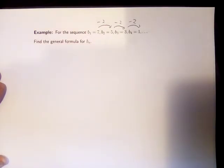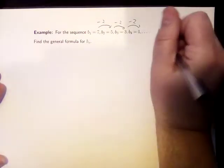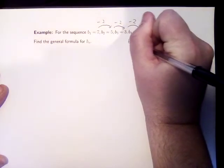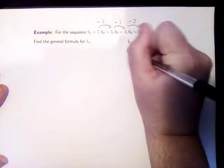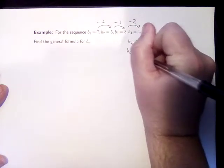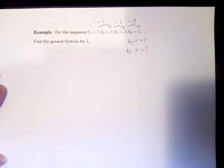So we can predict what should come next. B5 would be decreasing by 2 as well, so 1 going down by 2 should be negative 1. B6 going down by 2 again should get us down to negative 3, and so on.